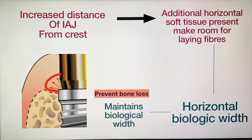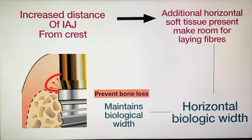Second is biological width. The formation of the horizontal step leads to repositioning of the implant-abutment junction away from the crest. Because of that, additional horizontal soft tissue will be present, which makes room for laying the fibers of biological width — establishing a horizontal biological width. In this way we can maintain the biological width and prevent bone loss.